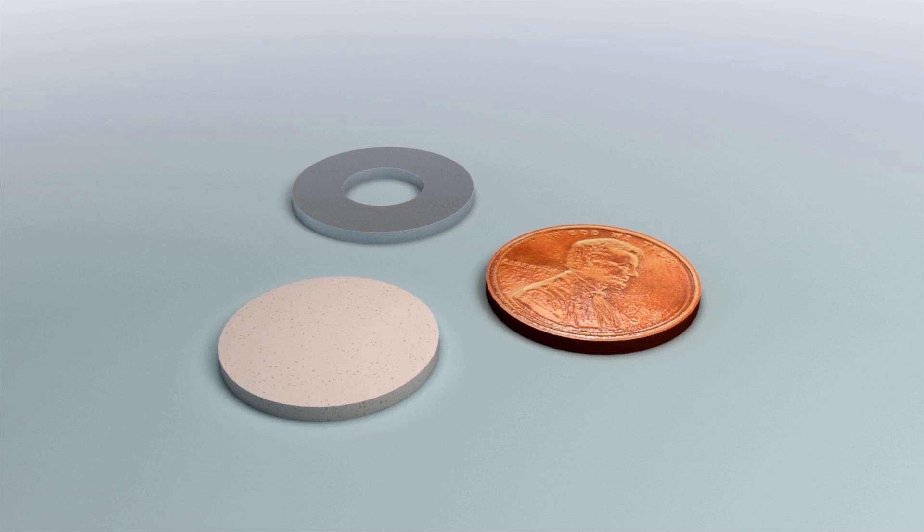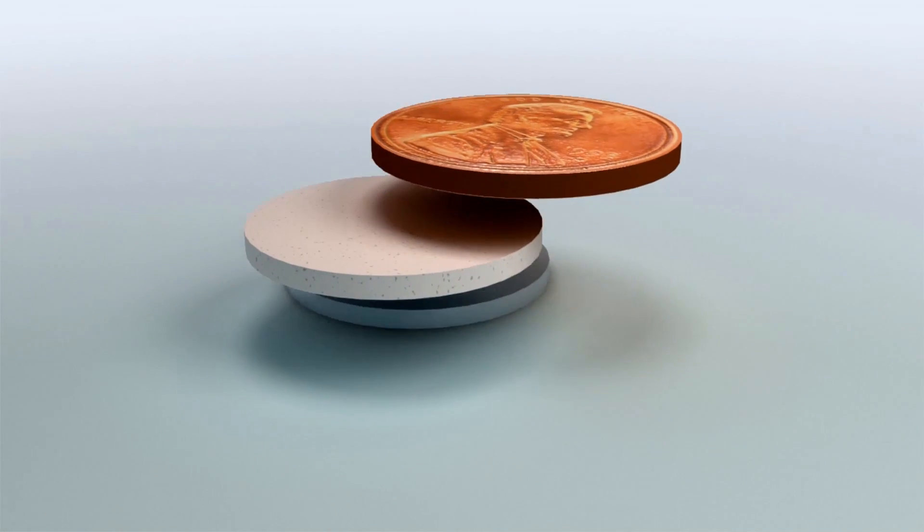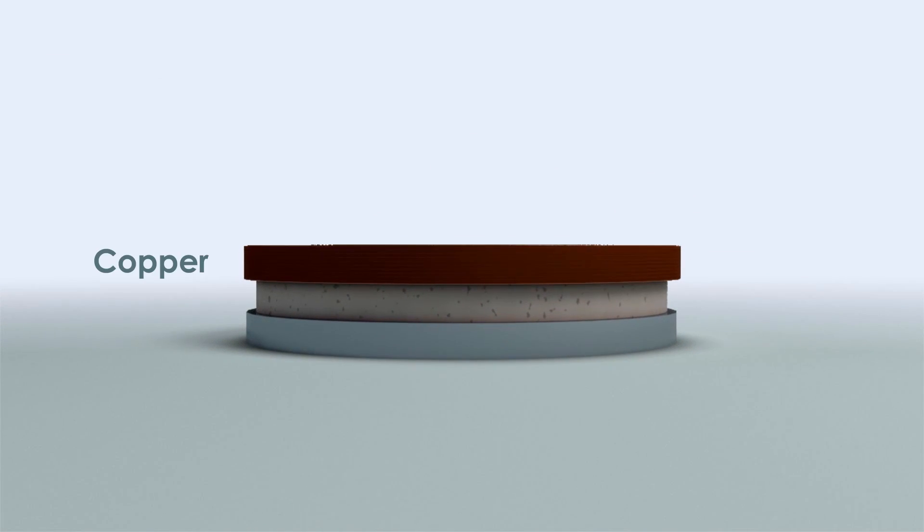I created an animation to help explain how this battery is going to work. A battery is simply three parts: two different metals separated by an electrolyte, in this case vinegar.